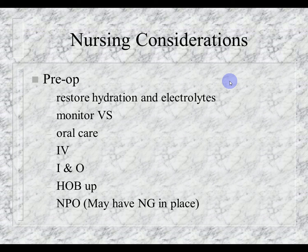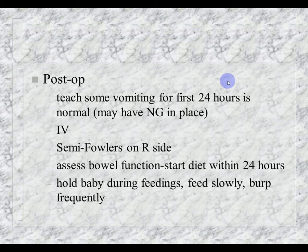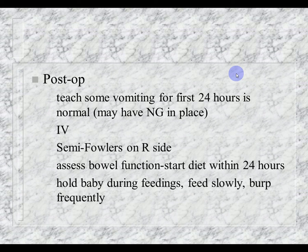Preoperatively: restore hydration, correct electrolytes and metabolic alkalosis due to all the vomiting; monitor vital signs, provide oral care. If an NG tube is in place, the patient is NPO for stomach decompression. Very important post-op teaching: some vomiting for the first 24 hours is normal — parents need to know this, since they've been watching their child projectile vomit and may think something is wrong after surgery. Post-op positioning is semi-Fowler's on the right side for normal flow of stomach contents. Assess bowel function; start diet within 24 hours, feeding slowly, holding the baby upright and burping frequently.